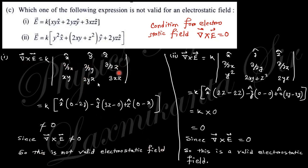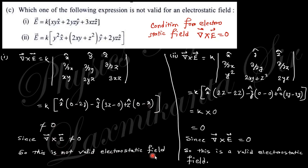You know curl is computed using ∂/∂x, ∂/∂y, ∂/∂z. When you take the x-component: ∂/∂y of the z-component minus ∂/∂z gives 2y; for the y-component: ∂/∂x gives 3z, ∂/∂z gives 0; for the z-component: ∂/∂x gives 0, ∂/∂y gives x. So the curl is not zero — this is not a valid electrostatic field. But for the second expression, the curl becomes zero, so that one is a valid electrostatic field.